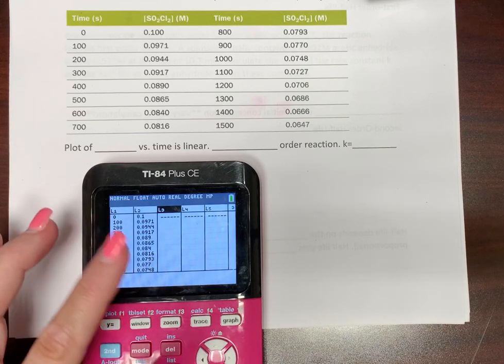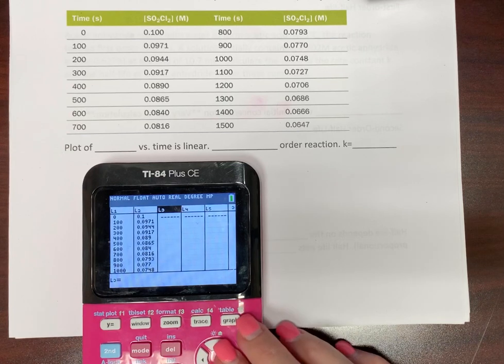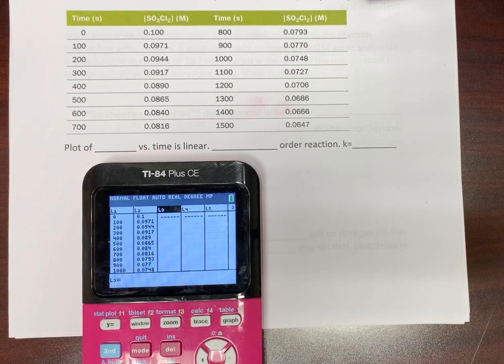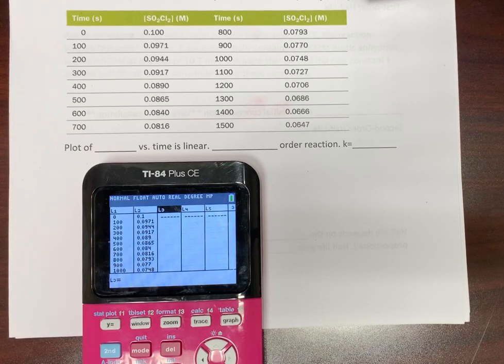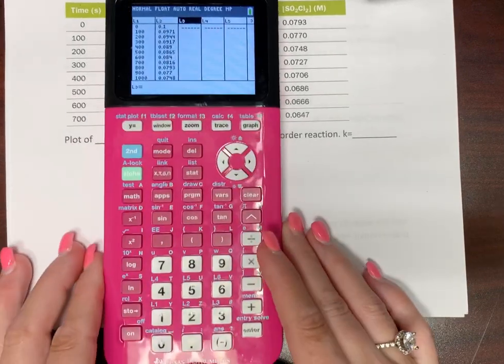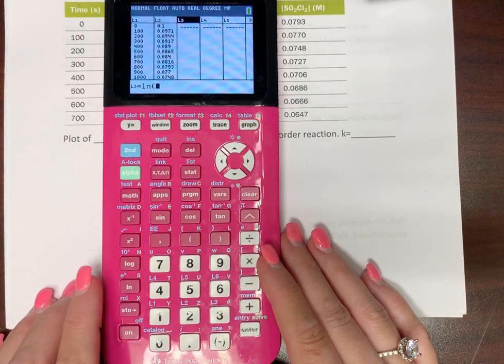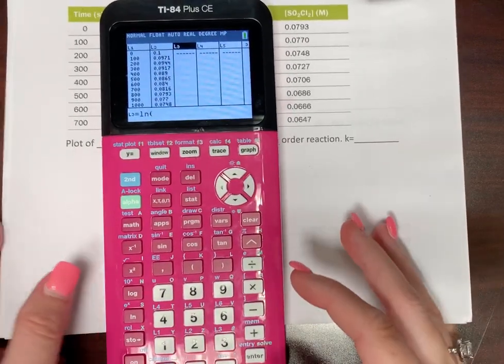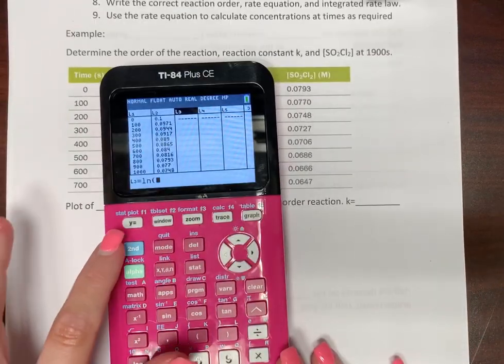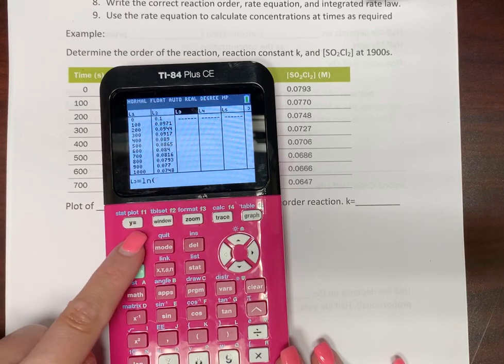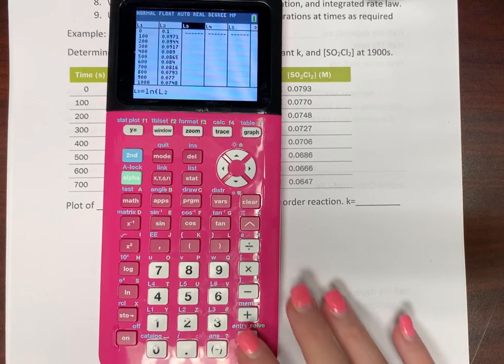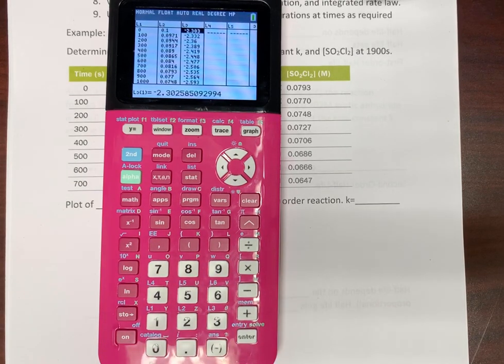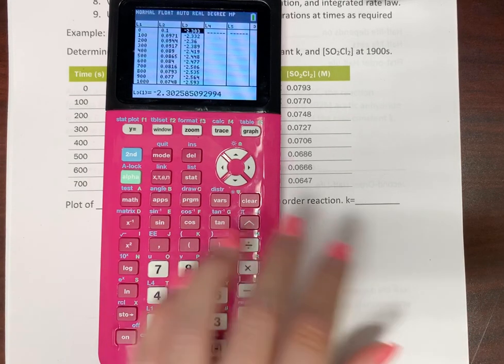So you go up and you're going to highlight list three. And you're going to say that list three is going to equal, so this would be like our first order reaction. It would be proportional to this. So we know we actually need the natural log. So natural log is going to be here. So hit natural log. And then now go to, hit second. And then do you see how this says list two right here in blue? List two.